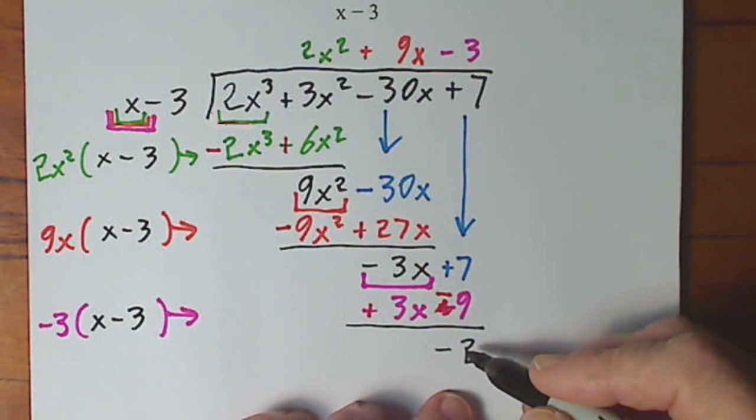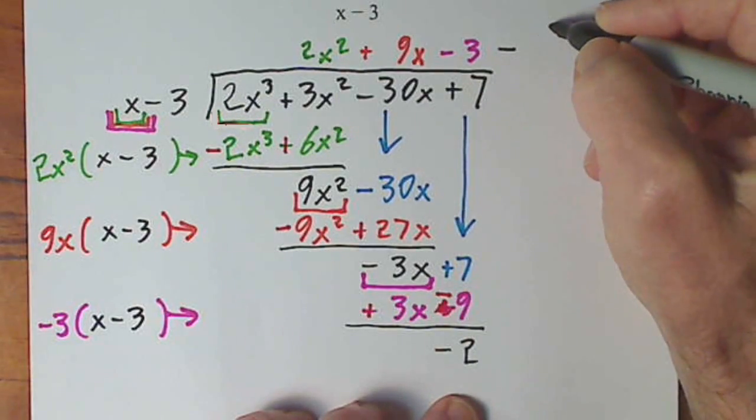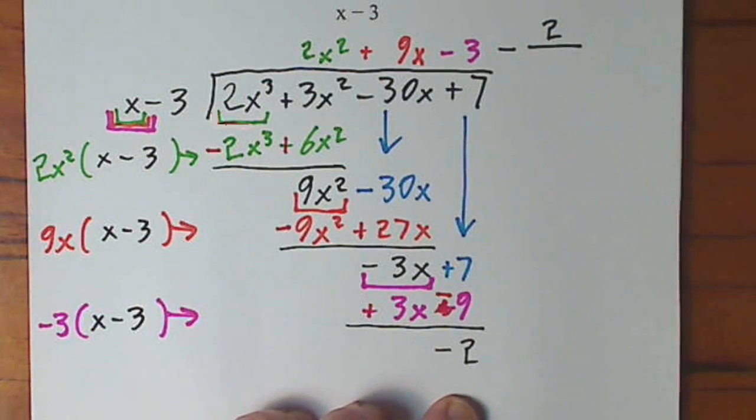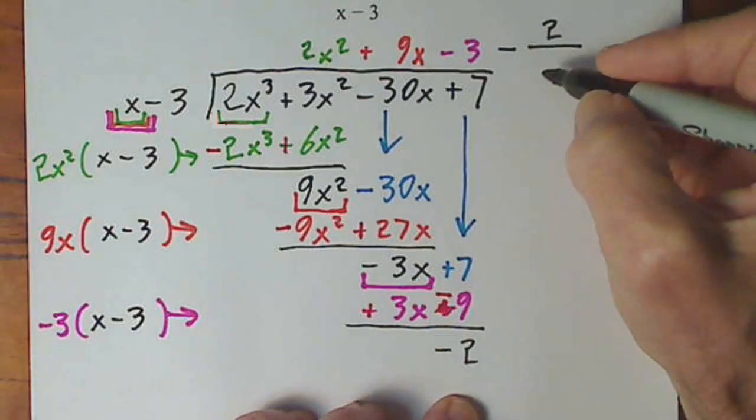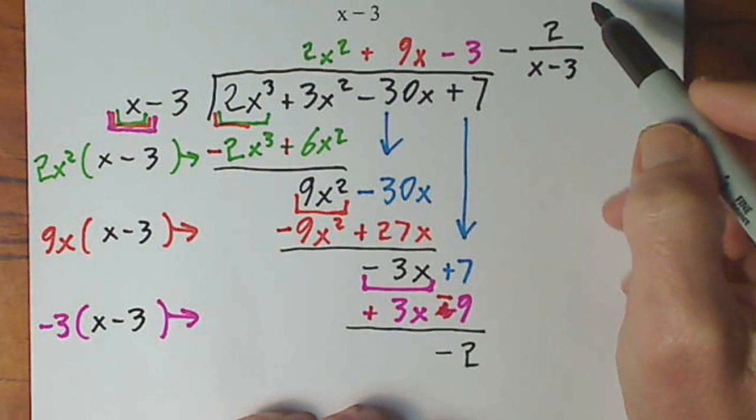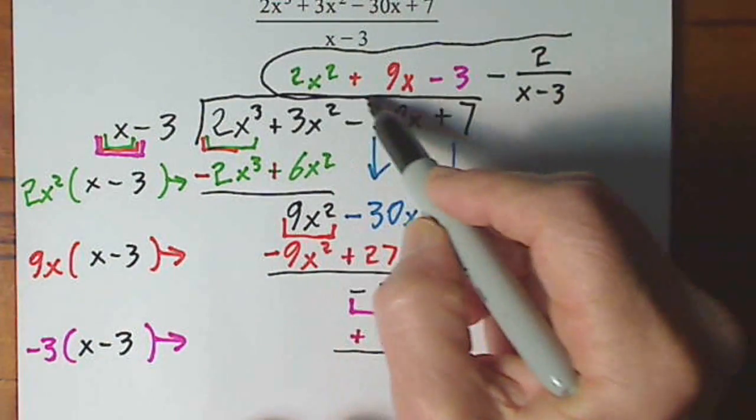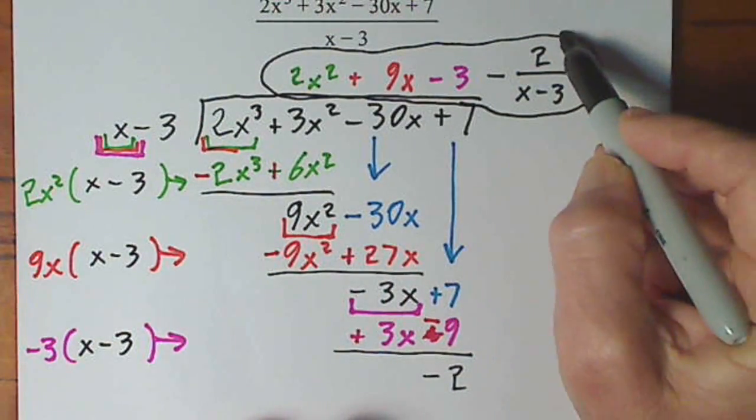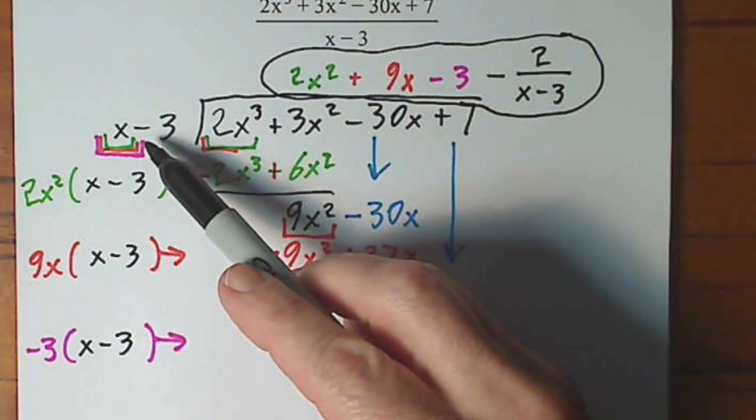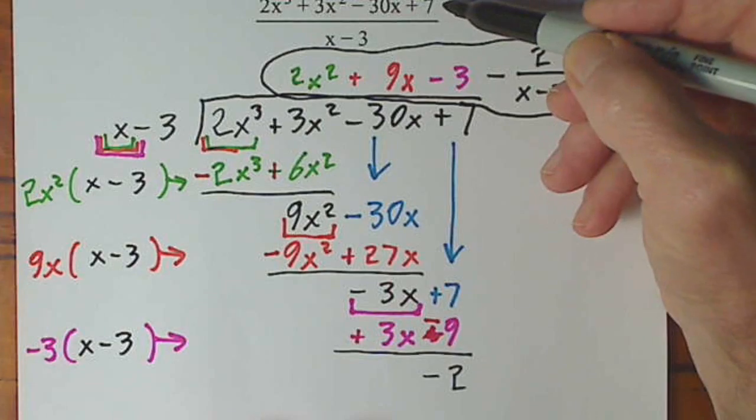So the way we write this is a remainder. So this is minus 2 over x minus 3. So make sure this is in view. This is our answer up here. And if you multiply x minus 3 times this, you will get the numerator.